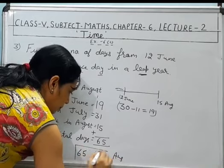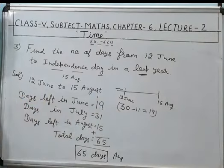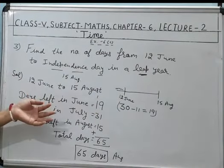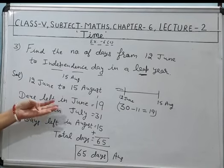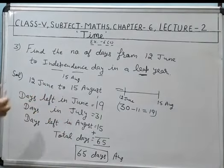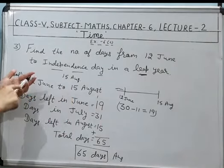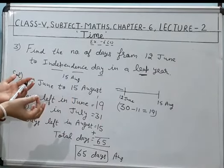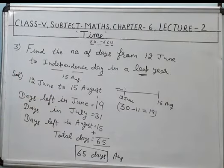Got it? In this way you can calculate. You can calculate these days on your fingers also from 12 June: 12, 13, 14, 15, 16, 17, 18, 19, 20, 21, 22, 23, 24, 25, 26, then 27, 28, 29 and 30. So you can calculate orally also or by doing this subtraction.